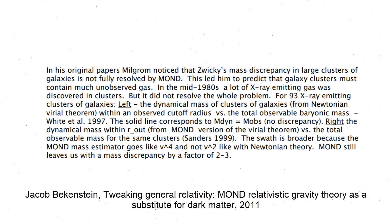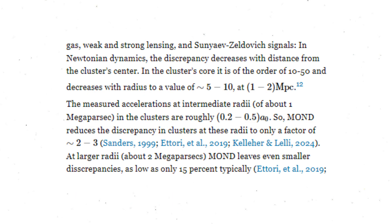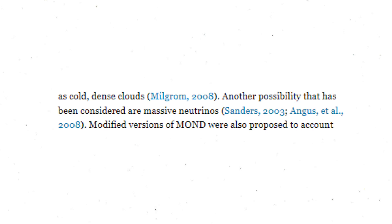Since MOND alleviates the mass-luminosity discrepancies in galaxy cluster dynamics from a factor of five or six to two or three, and by using MOND the discrepancy decreases with increasing distance from the center of the clusters, some MONDists report suggests that a physical form of dark matter could exist in these systems.